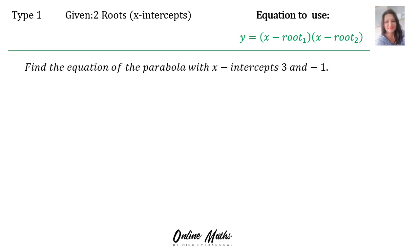Let's do an example. The question says, find the equation of the parabola with x-intercepts 3 and negative 1. So you will start with the formula that you memorized. And in the roots places, you will substitute the 3 and the negative 1. And use plenty of brackets,